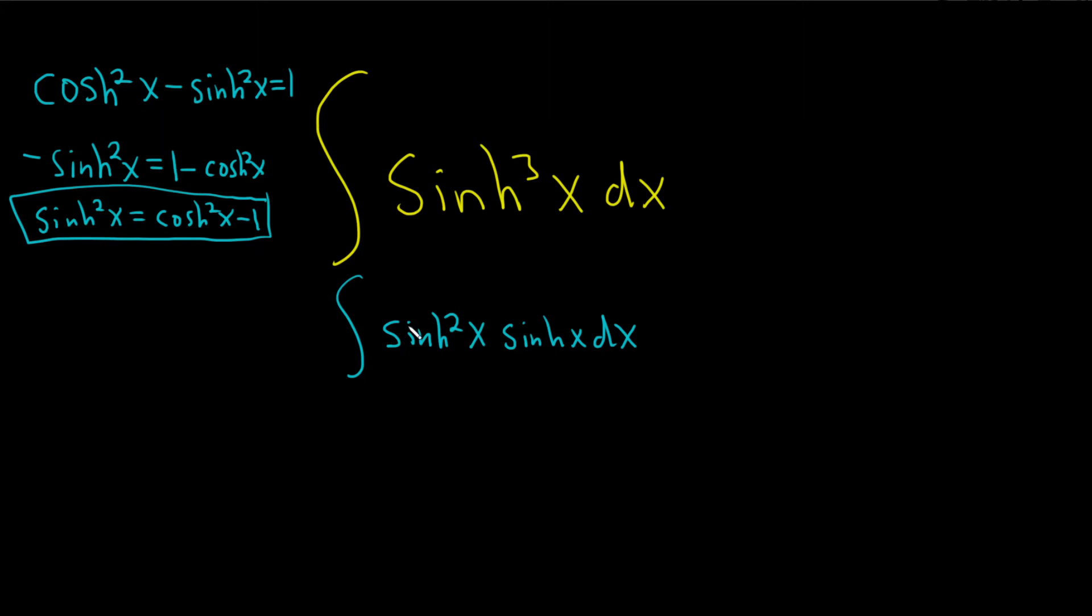So now let's rewrite this sinh squared piece using this identity here. So this will be cosh squared of x minus 1, and then we're left with sinh of x and then dx.